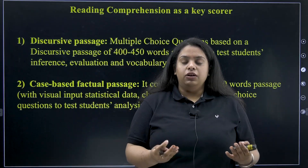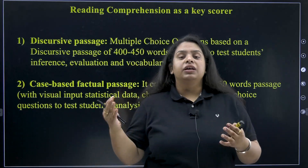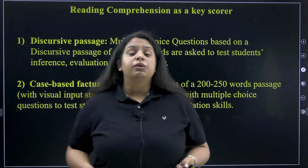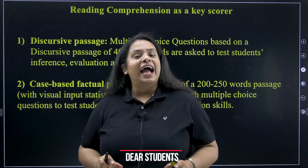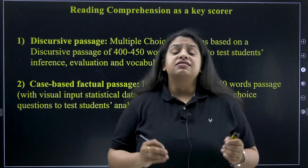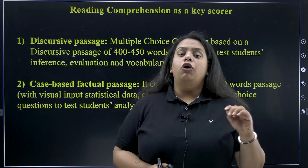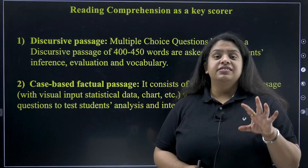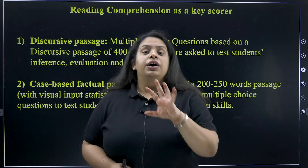A discursive passage can cover one topic or genre, and the other can be of another genre — there is no requirement for continuity or facts. The discursive passage will not be more than 500 words, which is a very small passage. The second type is the case-based factual passage. In factual passages, we cannot tweak the information — the facts must be presented exactly as they are, with no changes.